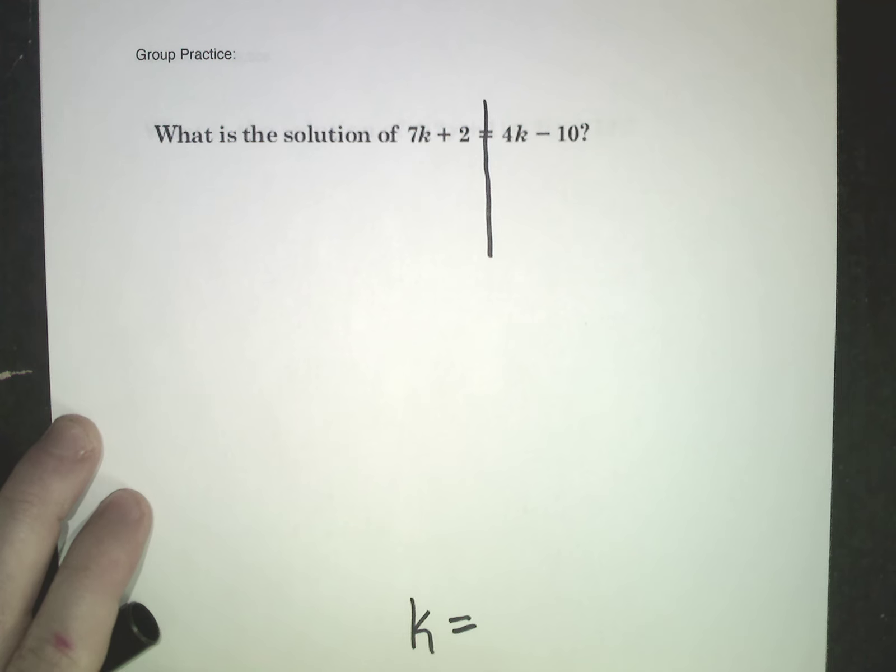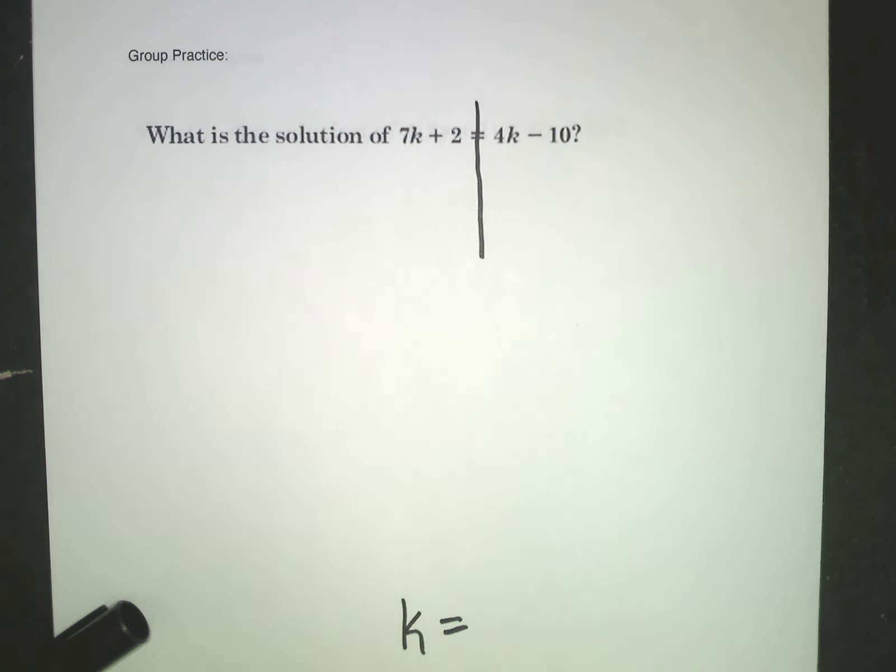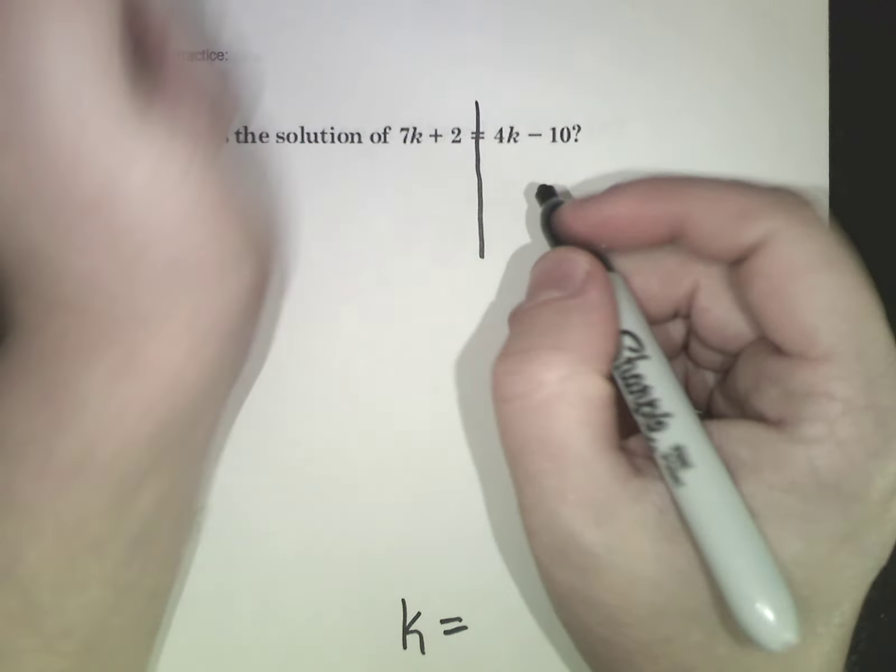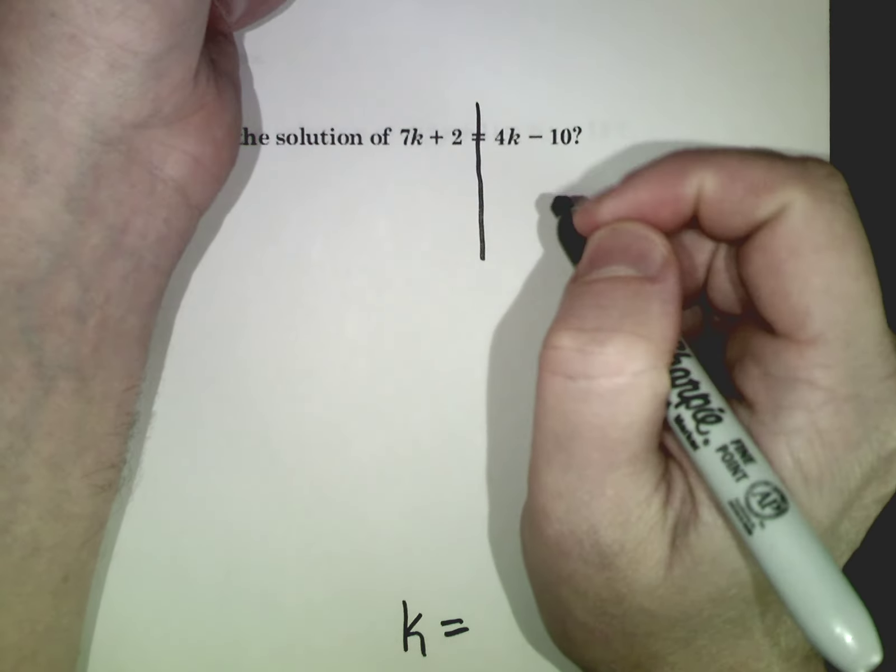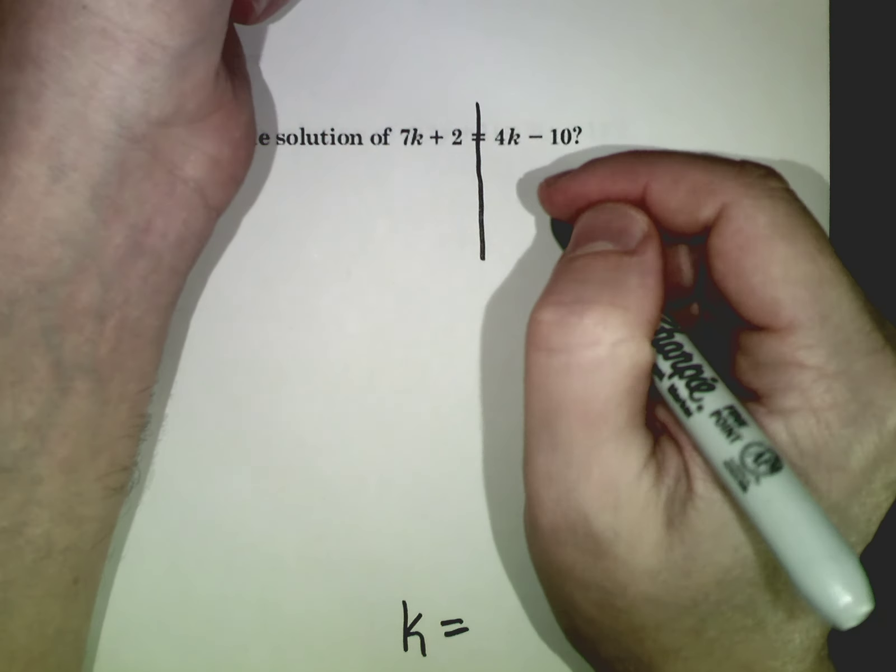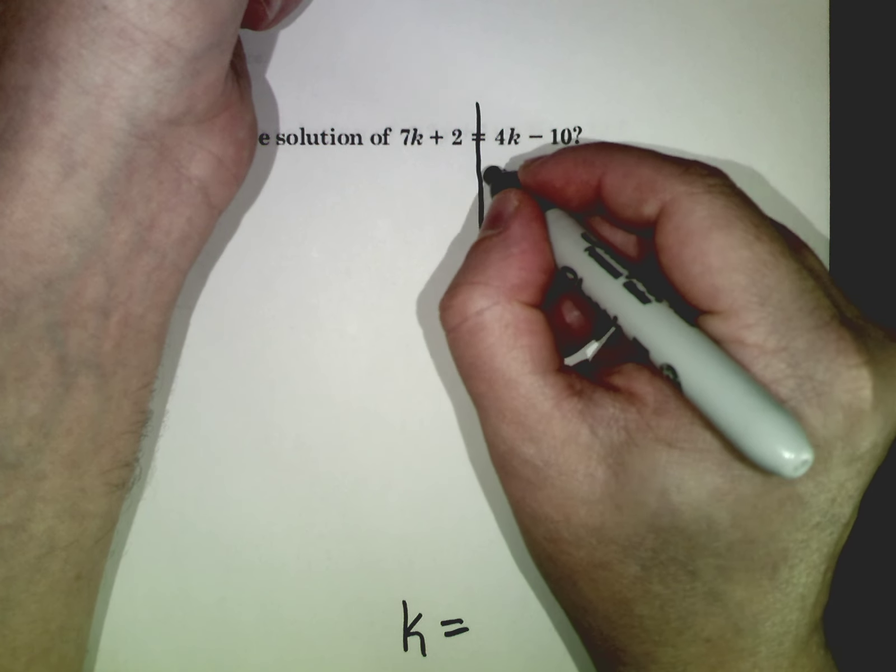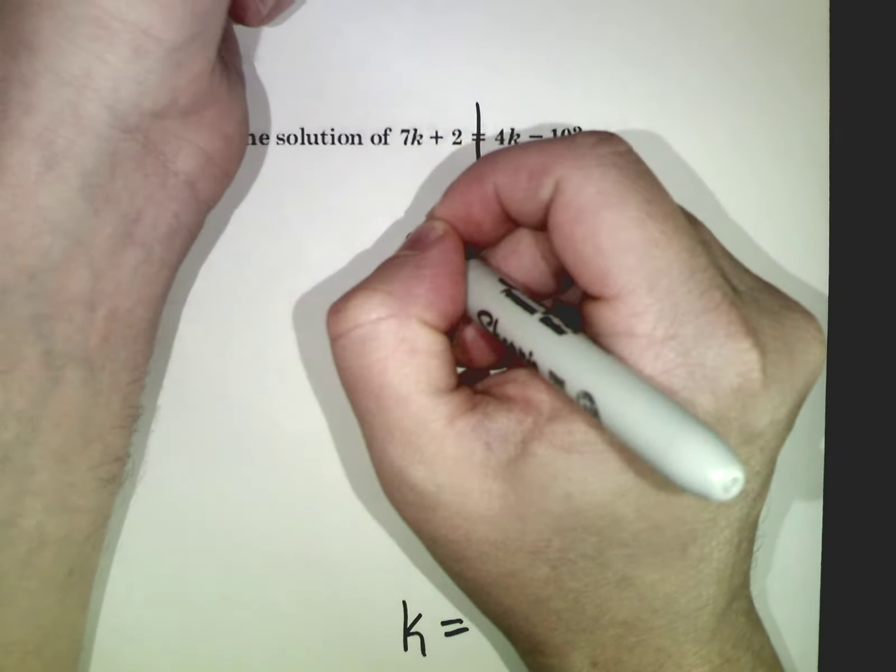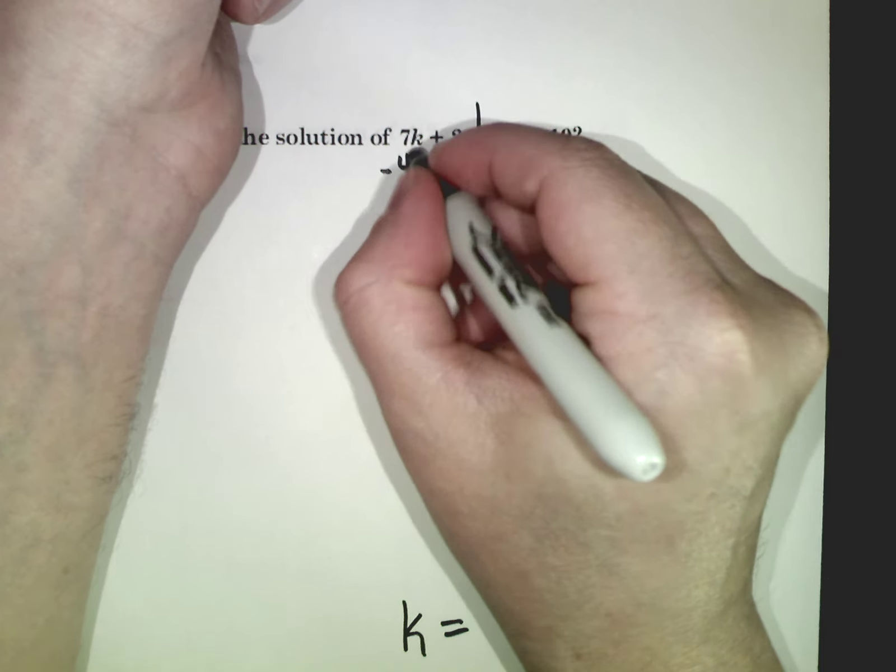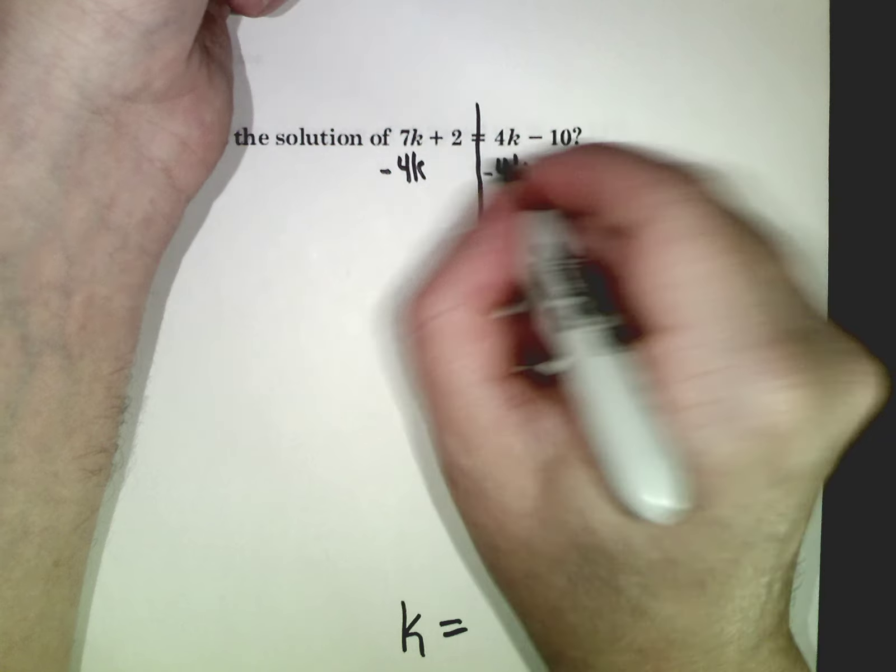Now, according to my good friend Mr. Gill, he says always move the baby, move the smaller one. That usually helps you out, it makes things a little bit easier. It's not a 100% rule, but it's a pretty good rule. So I'm going to look at this 7k, 4k. I'm almost thinking like combining like terms in a sense. Well, 4k, that's a positive 4k. So to get rid of that, I need a negative 4k. Got to do the same over here. I can't put the 4k with the 2, they're not like terms.